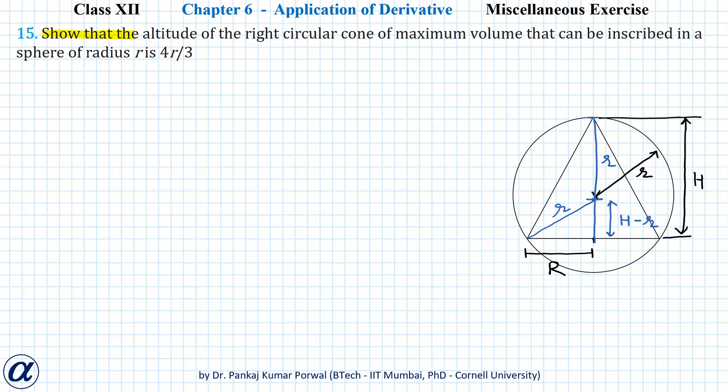In this question we need to show that the altitude of the right circular cone of maximum volume that can be inscribed in a sphere of radius r is 4r/3.